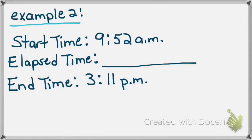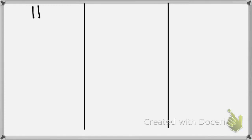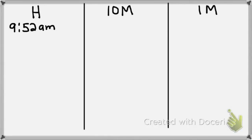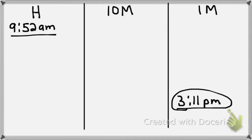Example number 2. The start time is 9:52 a.m., the elapsed time is unknown, and the end time is 3:11 p.m. I need to figure out the elapsed time. As always, I divide my paper into three columns: hours, 10 minutes, and 1 minute. I don't know the hours and minutes yet. My start time is 9:52 a.m. and my end time is 3:11 p.m. Let's start counting hour by hour — I don't want to pass 3:11.